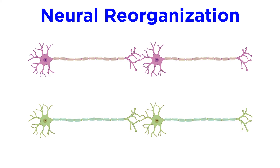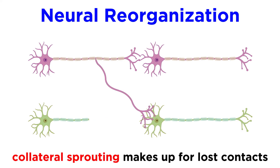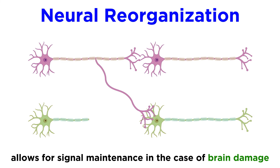By contrast, neural reorganization occurs when an axon is severed and a nearby neuron exhibits collateral sprouting, allowing new axon terminals to synapse with the neuron that the first neuron can no longer synapse with. This strategy allows the brain to redirect traffic, so to speak, in the event of localized brain damage.